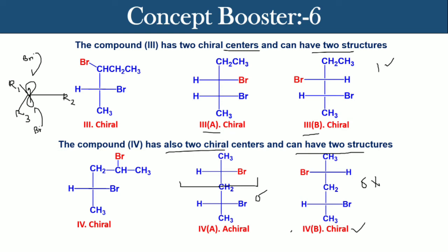So structure one or product one is chiral, and product two is achiral. Product three can have two structures, that is a and b, and both are chiral. Product four can also have two structures, a and b, where a is not chiral but b is chiral. And product five is chiral. So one, two, three, four, and five, right? So the number of possible chiral products is five.